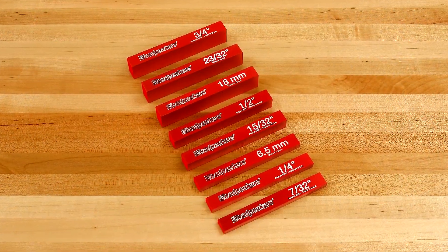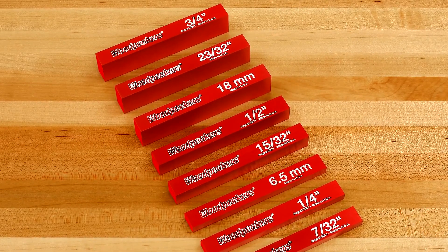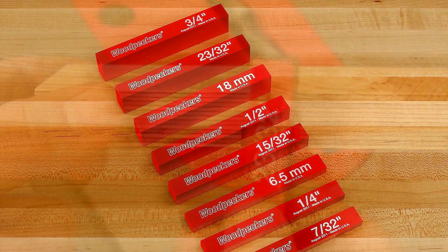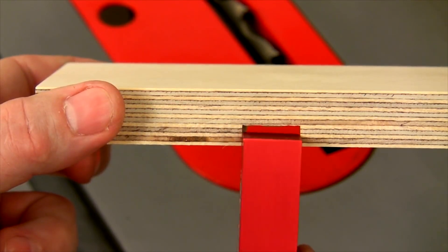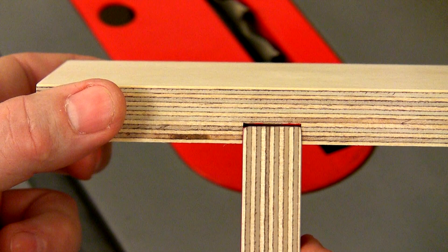And in the Jumbo Deluxe Set, you'll find eight setup blocks that fit today's most common plywood widths. Use them to set your dado cutter width, and then use them to check your dados and rabbet joints for a perfect fit.